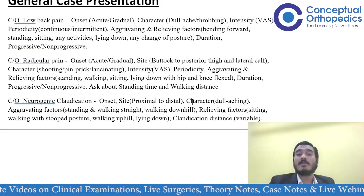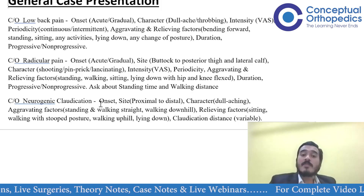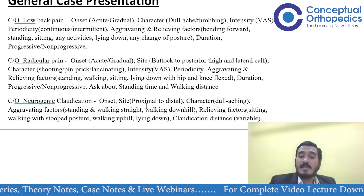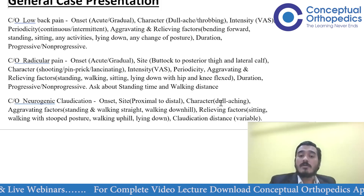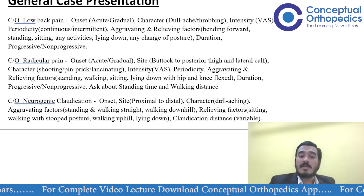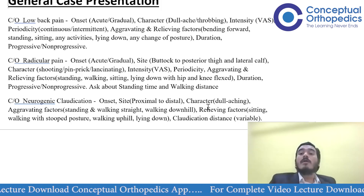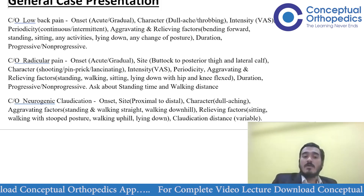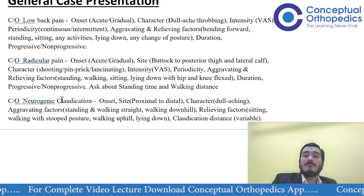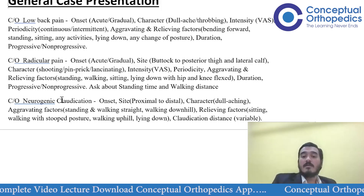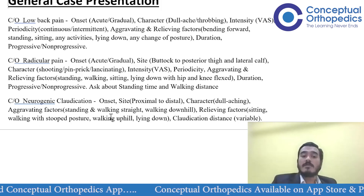The next common complaint is neurogenic claudication. Ask for the onset, the site — whether it is proximal to distal or distal to proximal — because a distal to proximal presentation may suggest vascular claudication rather than neurogenic. Ask about the character — whether it is dull aching — and the aggravating factors. These patients typically have pain when walking and need to sit down for relief.